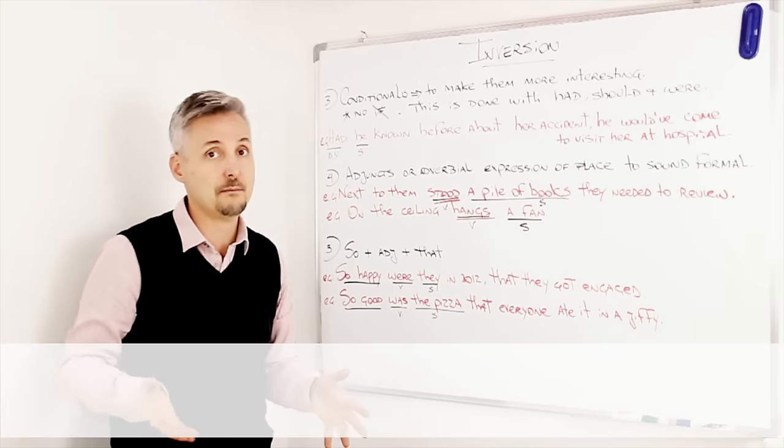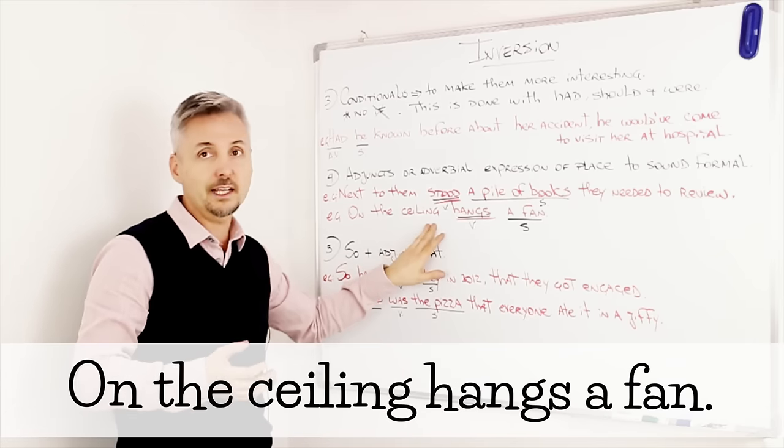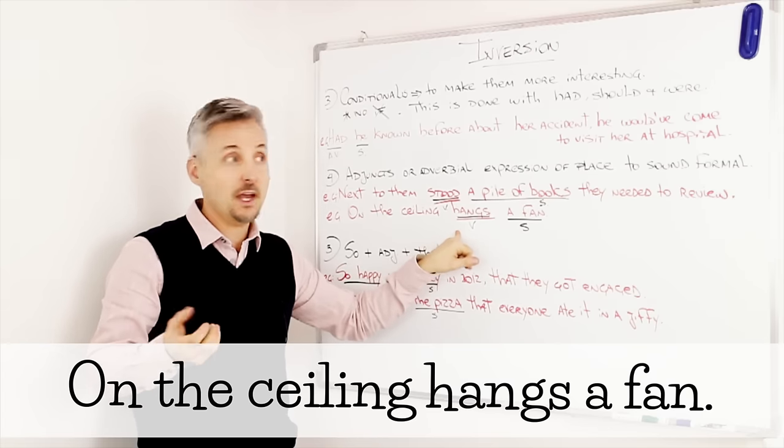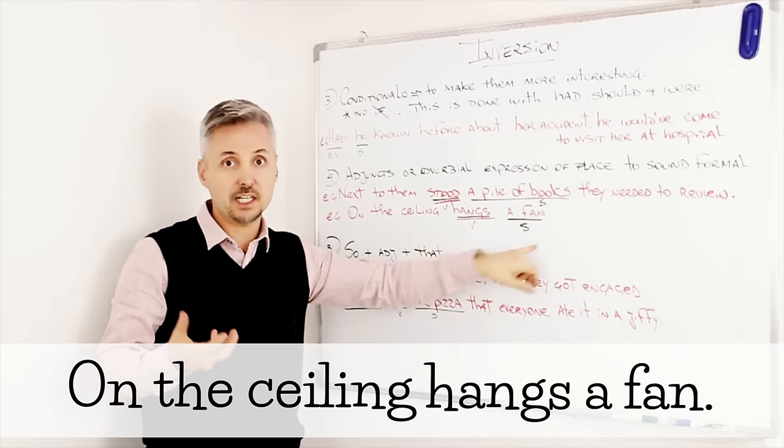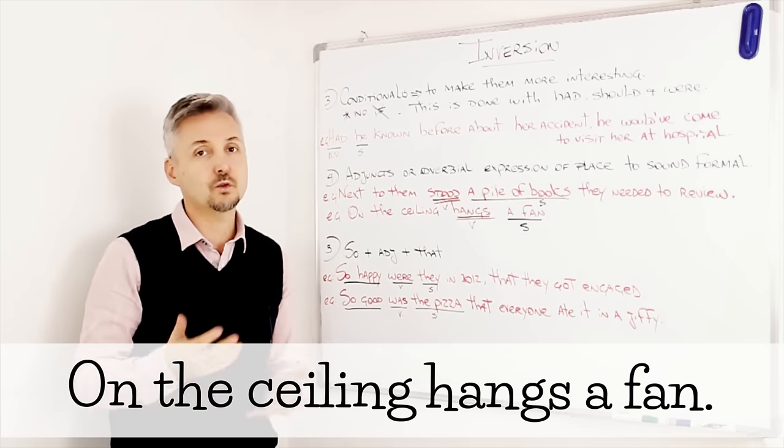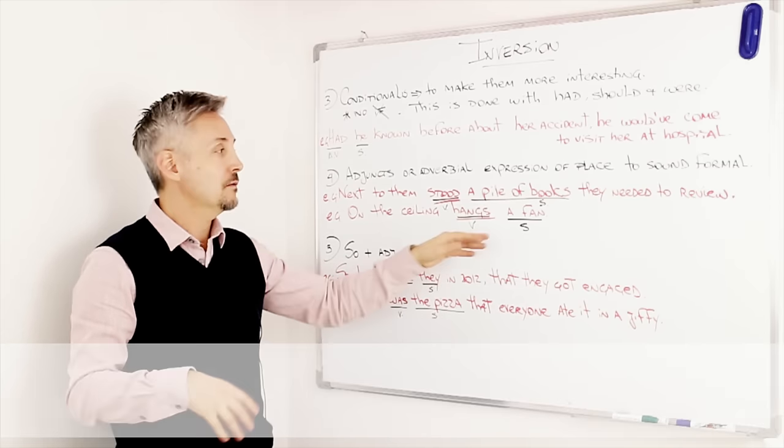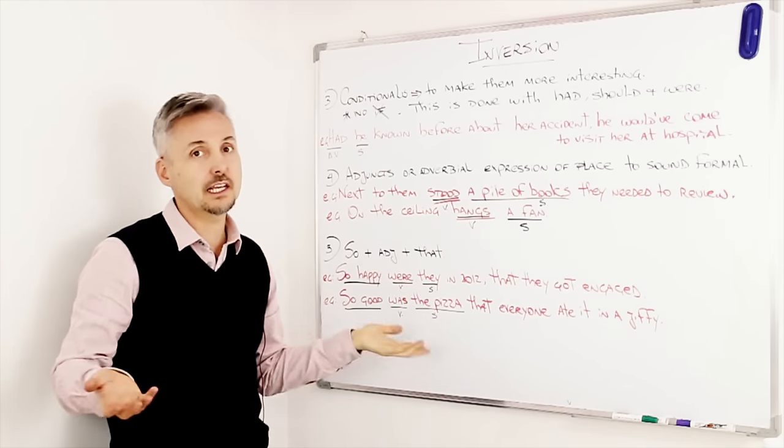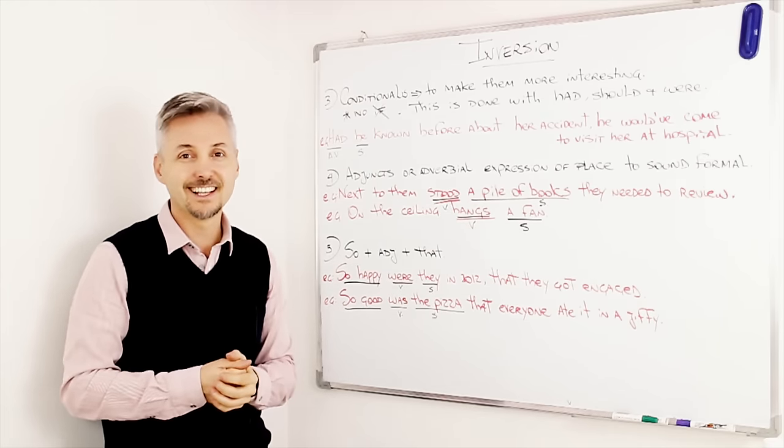Let's look at another example. On the ceiling hangs a fan. So, hang is the verb, and a fan is the subject. So, to sound less formal, we could say, a fan hangs on the ceiling. That's it.